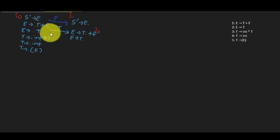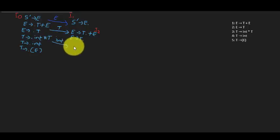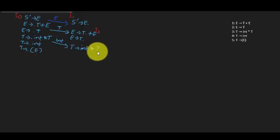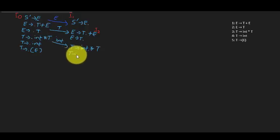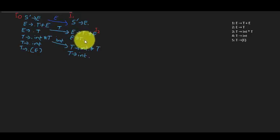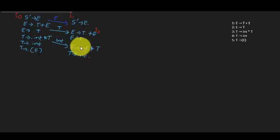On input int, we move the dot after int and get: T → int•*T and T → int•. Whenever the dot is at the end with no more symbols after it, we have reached the accepting state for that particular rule. So T → int• means we've reached the accepting state for that rule.